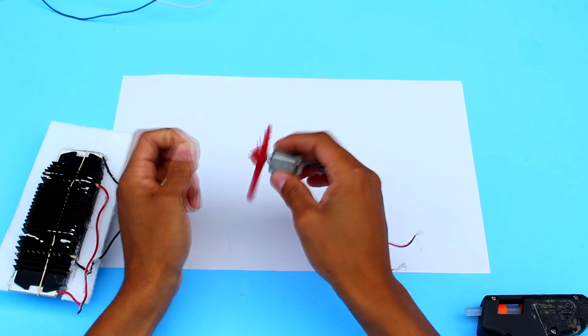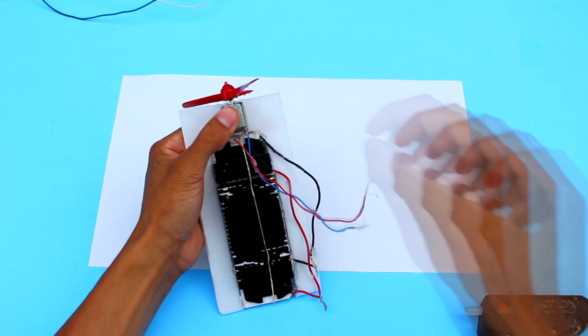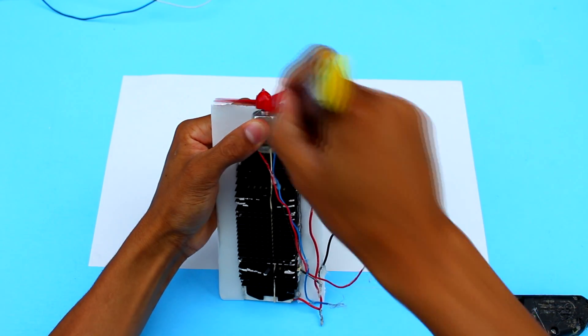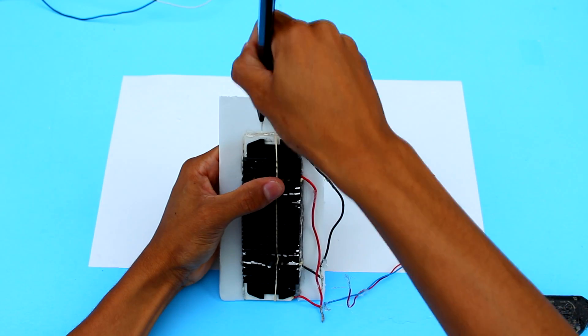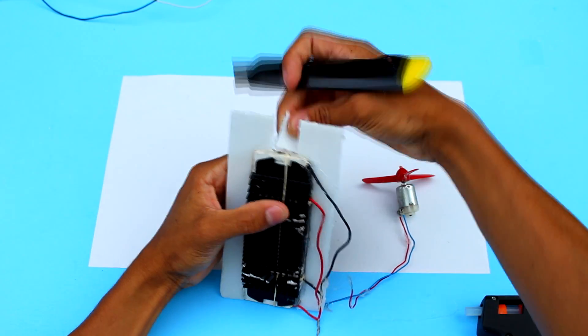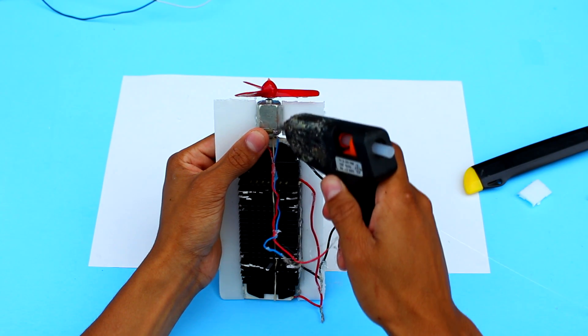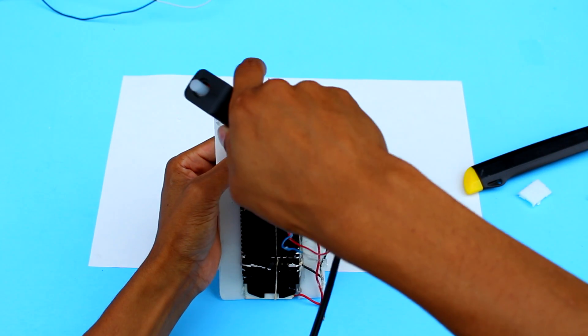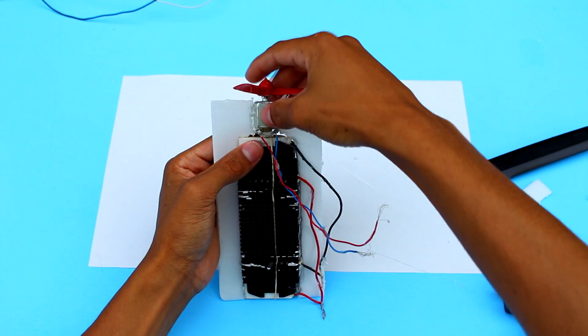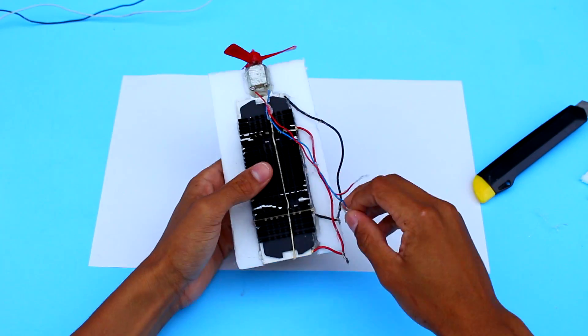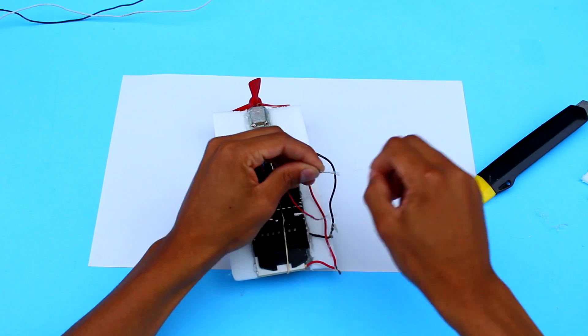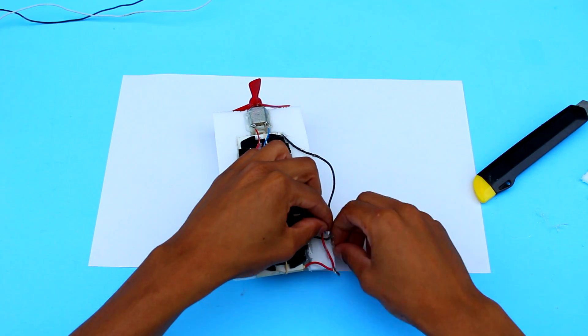Now, I'm going to attach a motor. This is going to be used to blow the cool air. I'll glue this fan into place. Now, I'm going to wire the fan in parallel as well with our Peltier elements.